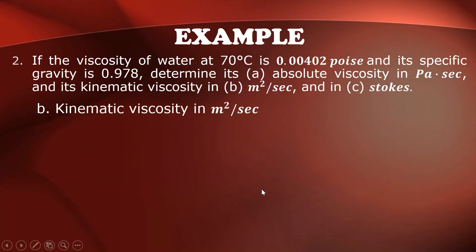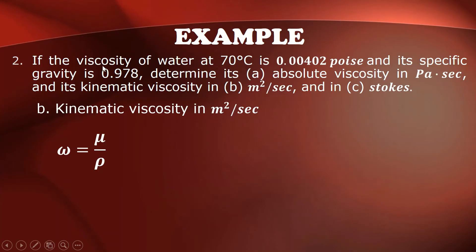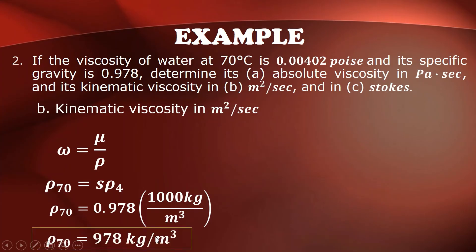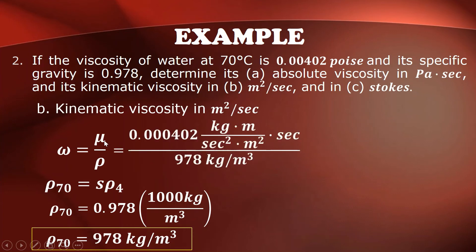For letter B, kinematic viscosity in meters squared per second. The specific gravity of water at standard conditions is 1 (at 4°C), but here at 70°C it is 0.978. So we compute the density: 0.978 times the standard density of 1000 kg/m³ gives 978 kg/m³ for water at 70°C.